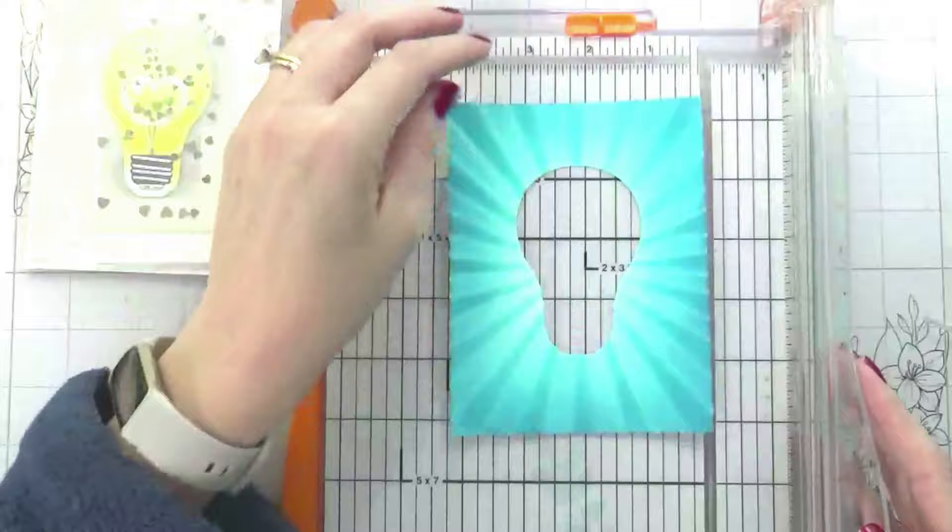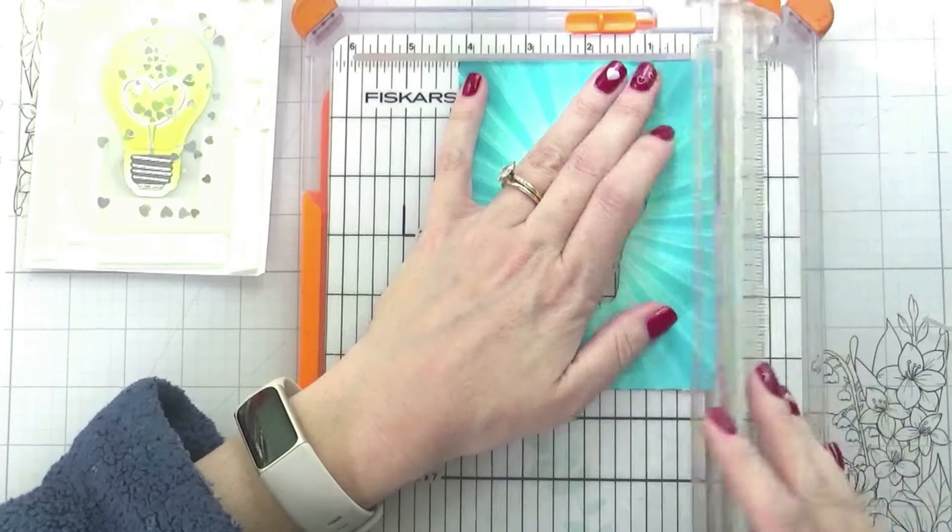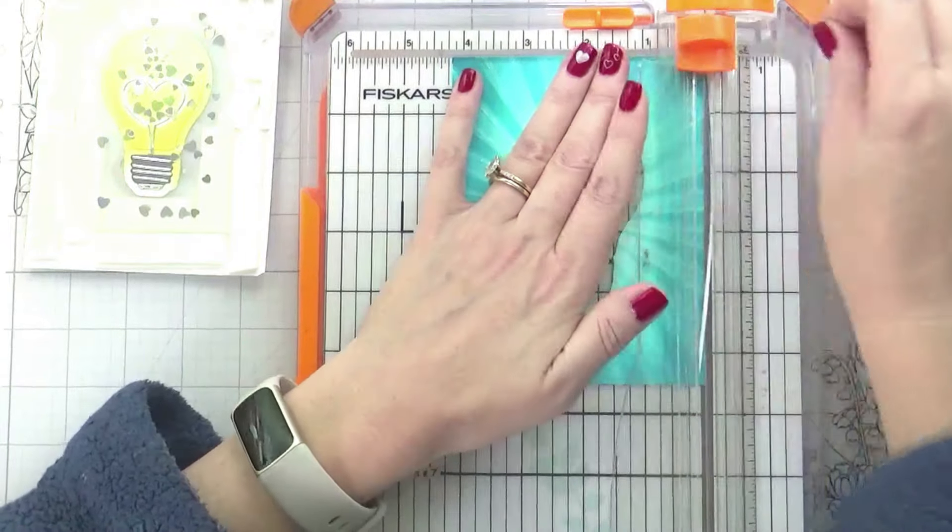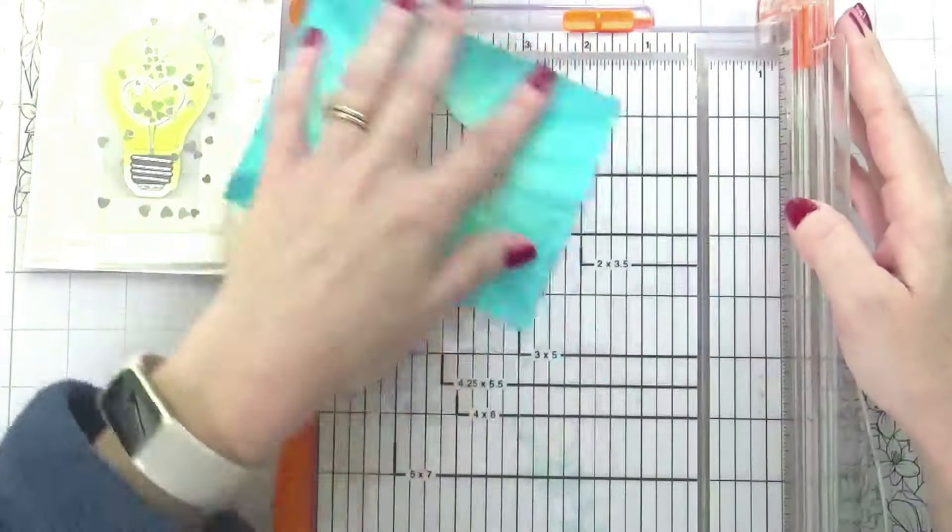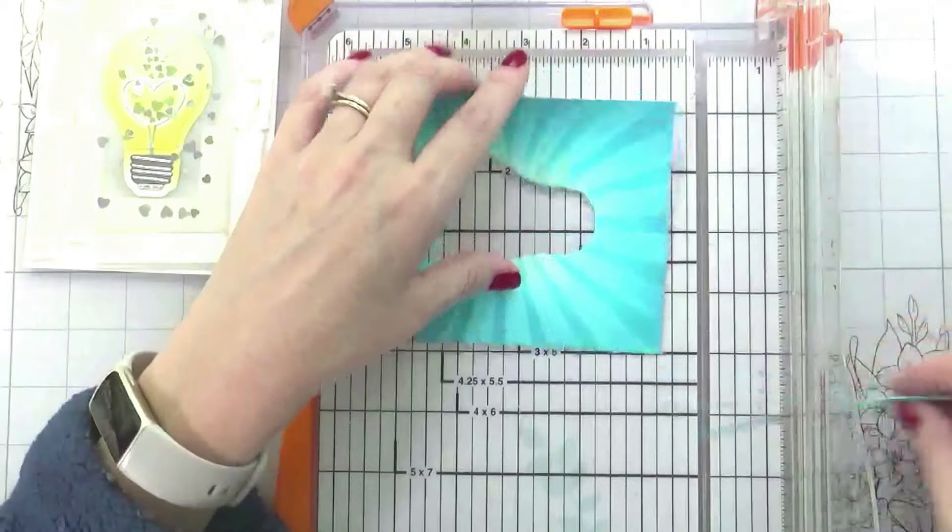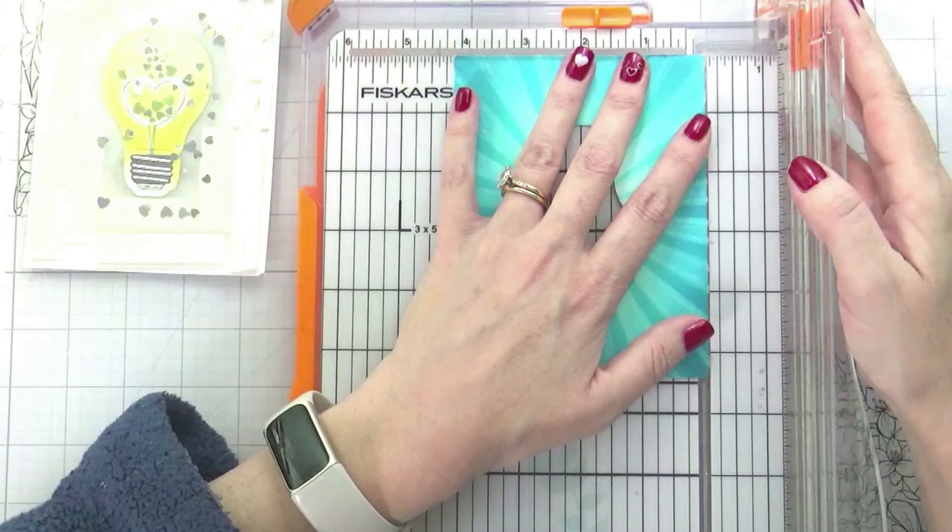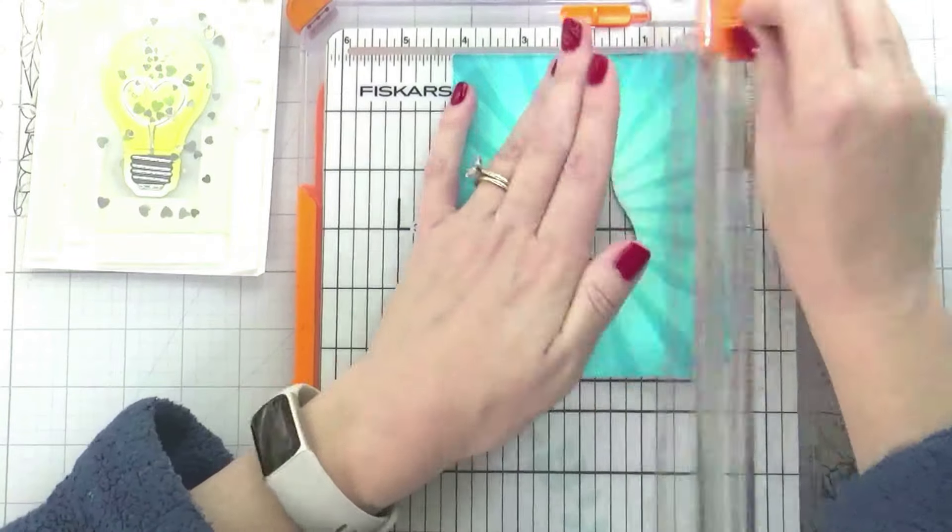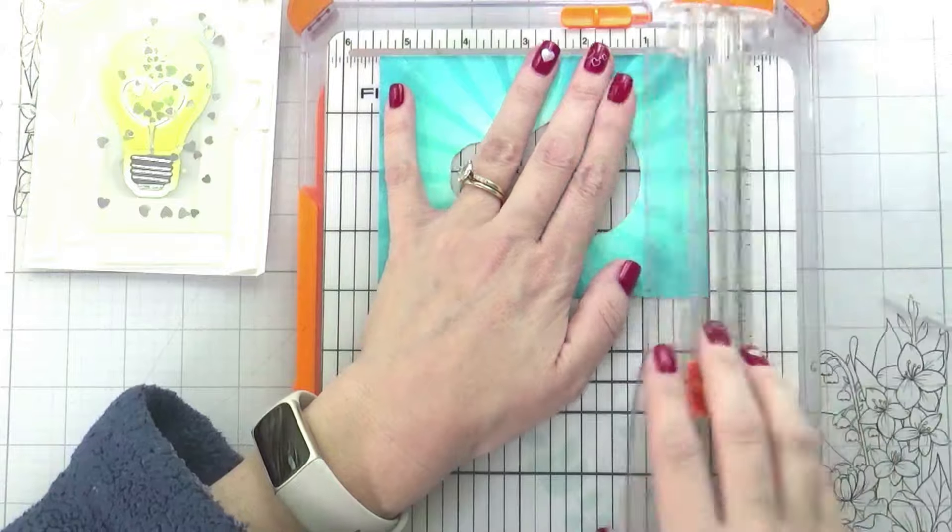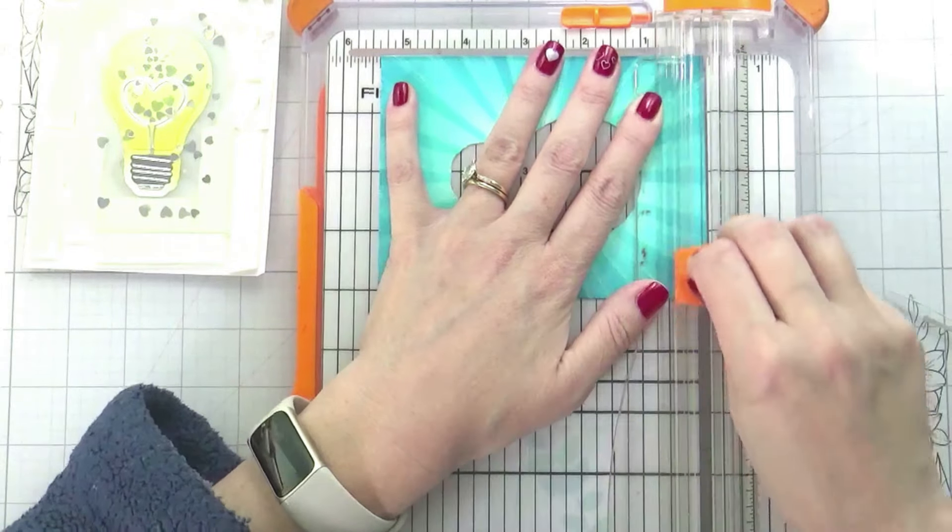Then this is where I decided to trim it down because I wanted a white border. When you have a card that has a central focal point that you've already done, you really do need to trim all four sides to keep it centered. But let's talk about light-up shaker cards. So great minds think alike, I guess.